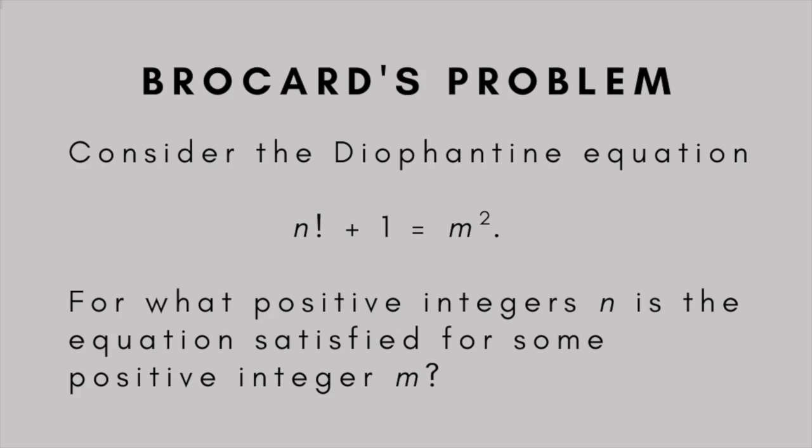Brocard's problem asks for what positive integers n is the equation n factorial plus 1 equals m squared satisfied for some positive integer m. Because only integer solutions are involved, the equation n factorial plus 1 equals m squared is what's known as a Diophantine equation.